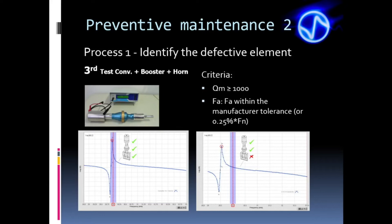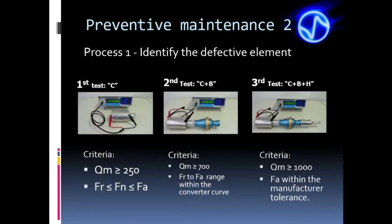The frequency criterion is the same as for predictive maintenance in class 1 of this module. It is worth remembering here that these criteria are basic and the manufacturer's tolerance must be respected. Furthermore, we recommend that the user of TRZ customize these criteria according to new elements' average values. In the examples, we have an approved stack and a failed one. Once the converter and booster are surely in good condition, the stack that failed has a damaged horn. This is the summary of the three tests to determine the defective element and the basic criteria for each test.